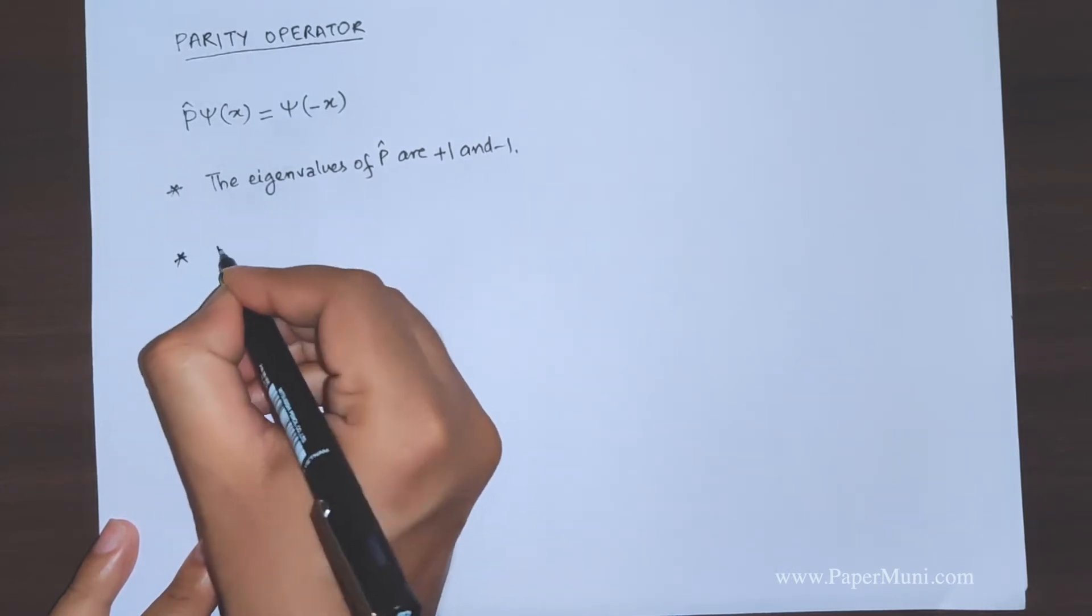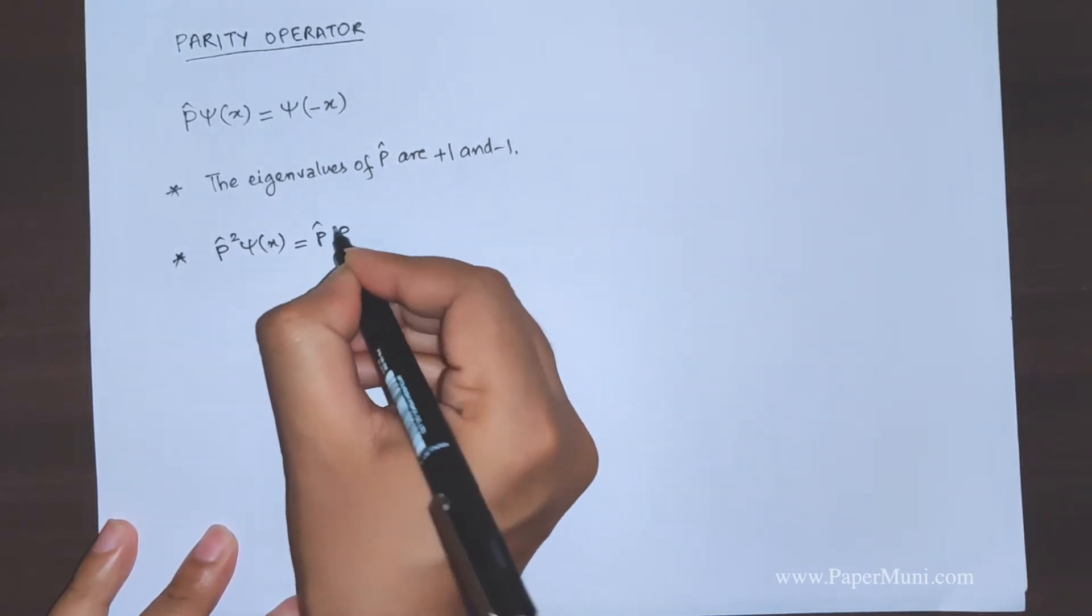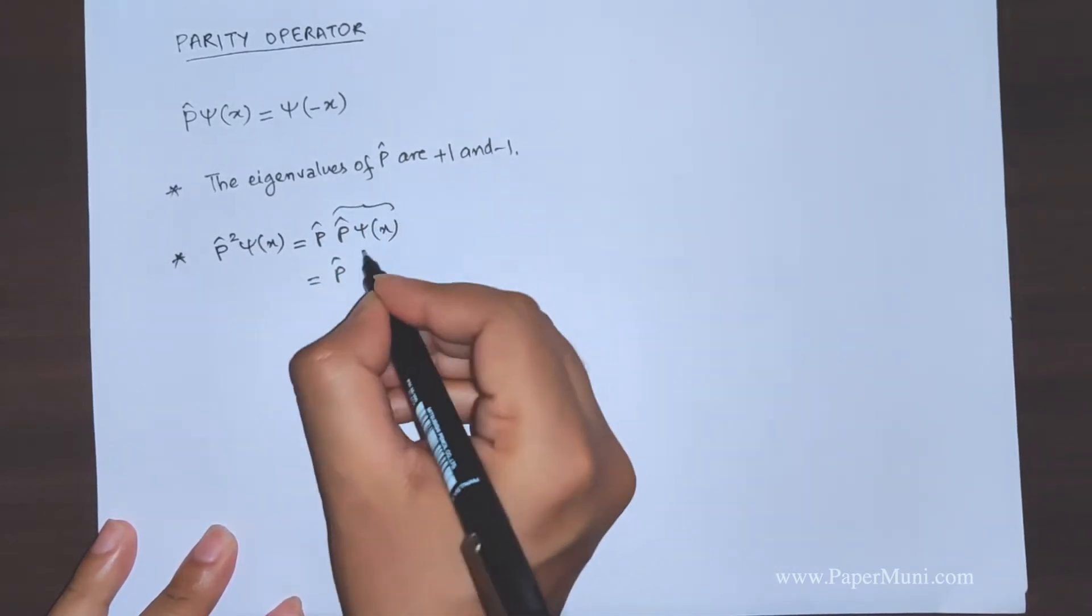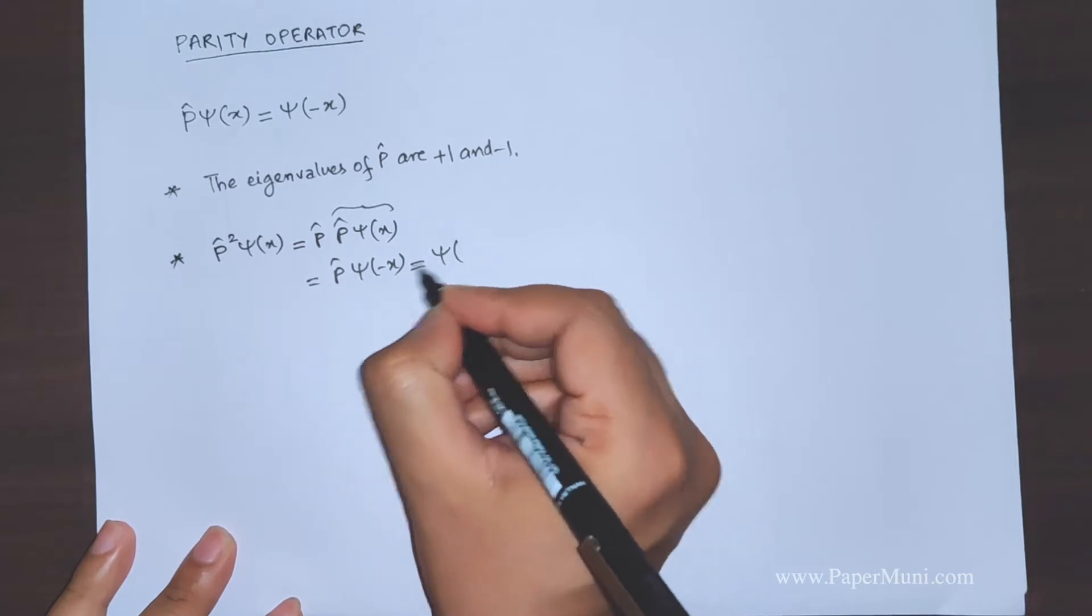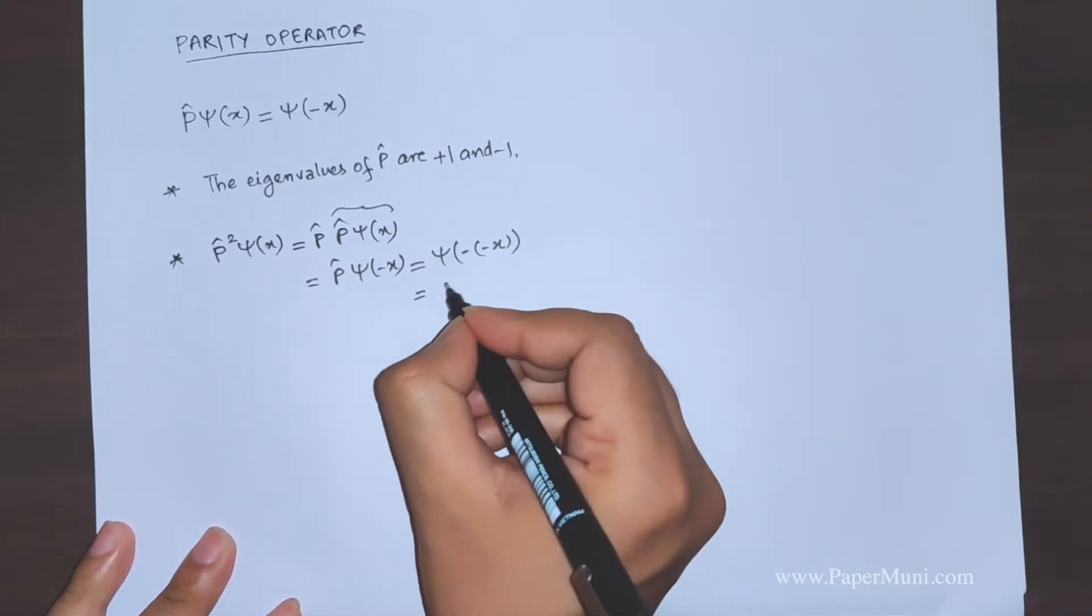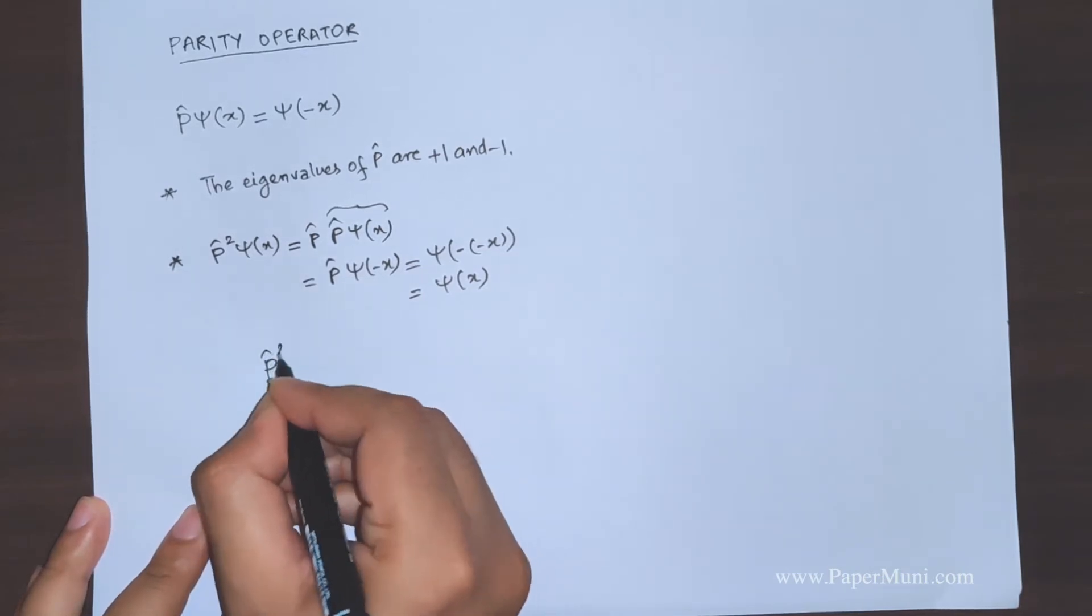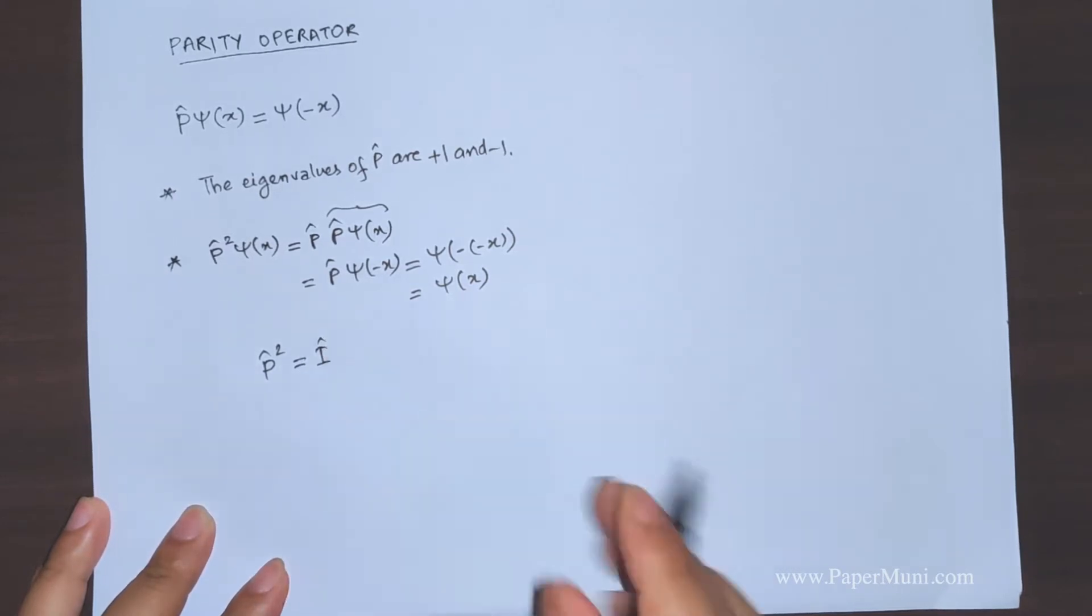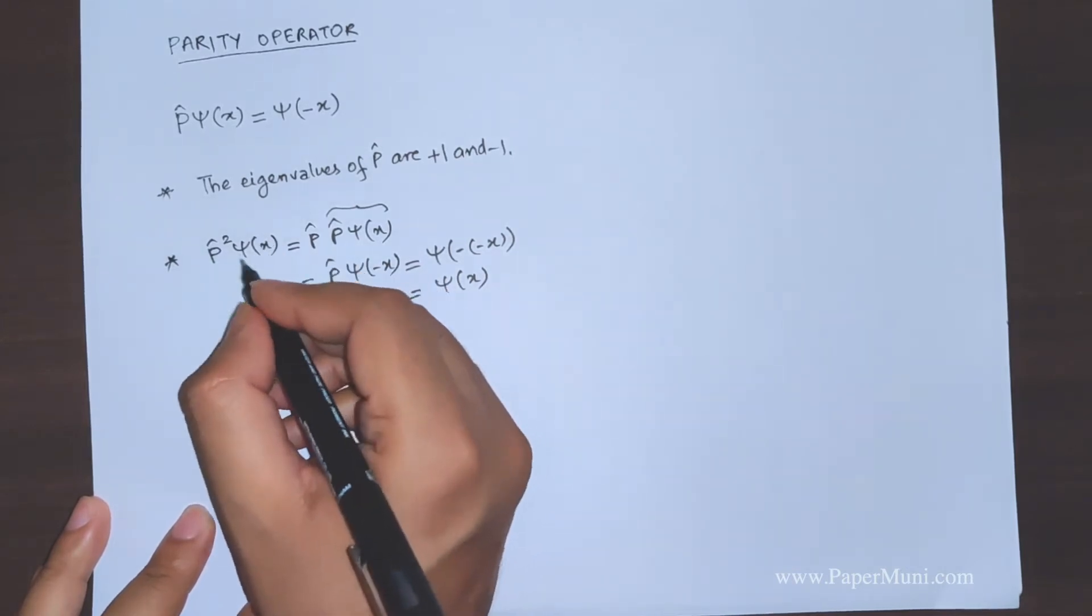Another thing is that if you operate parity operator twice, then this part becomes ψ of minus x, and again P operating, we again invert and put a negative sign in the space variable, so we get ψ of x. That means that P squared is equal to an identity operator. P square leaves the wave function unchanged.